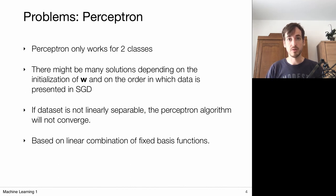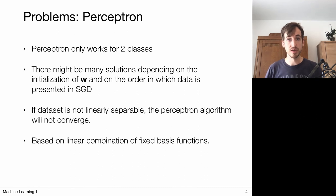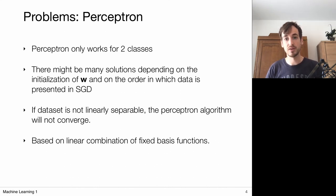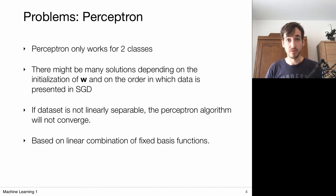This is a problem because often — almost always — we do not know in advance if our data is linearly separable. If we did know, we could just use the linear model we used during inspection. Generally we don't know if the algorithm will converge, so it's just wait and see. But the nice thing is that this algorithm is very fast and easy to implement.